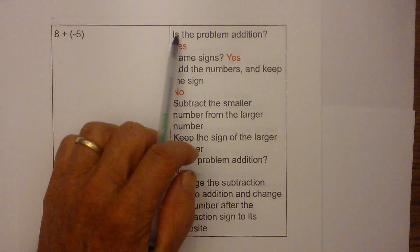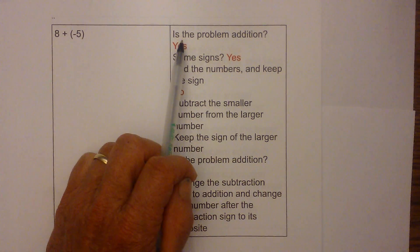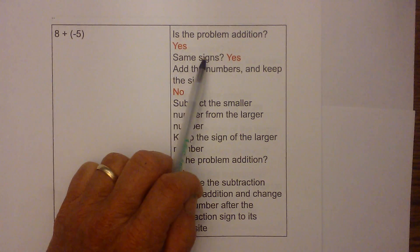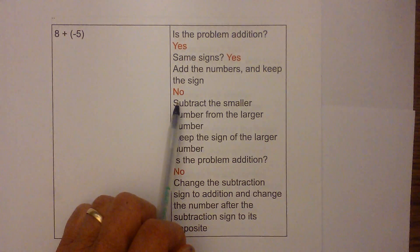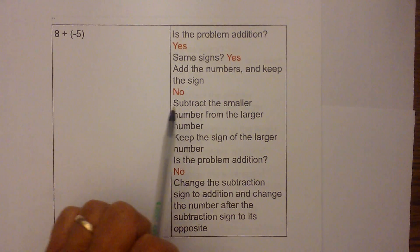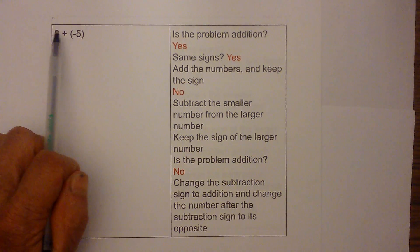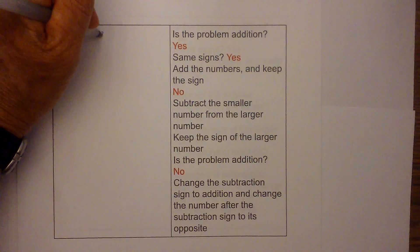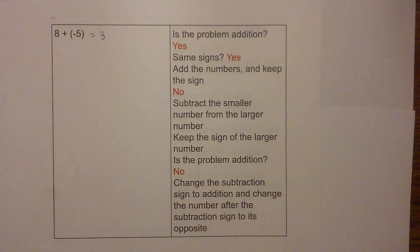Up first, let's work through the flowchart. We have eight plus a negative five. Is the problem addition? Yes. Do you have same signs? No. So we move down to no — subtract the smaller number from the larger number and keep the sign of the larger number. So I'll go eight minus five, because five is the smaller number, and that is three. I keep the sign of the larger number, so the answer is positive three.